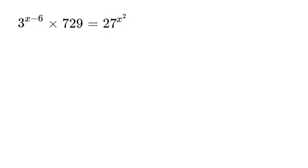Welcome to another Olympian math video. In this video we're going to be solving for x and the equation is 3 to the power of x minus 6 times 729 which equals 27 to the power of x squared.